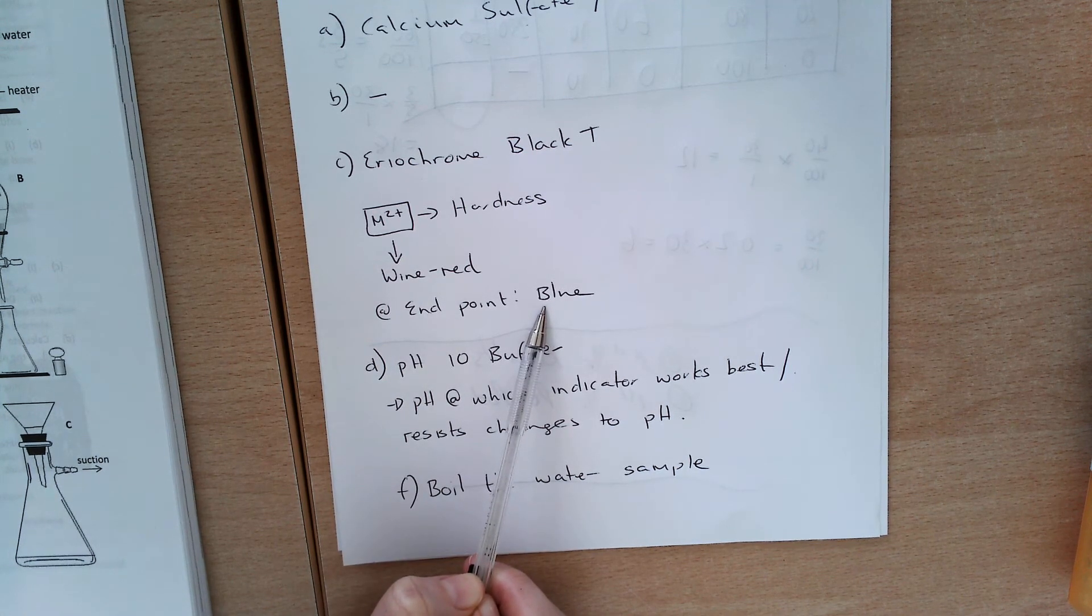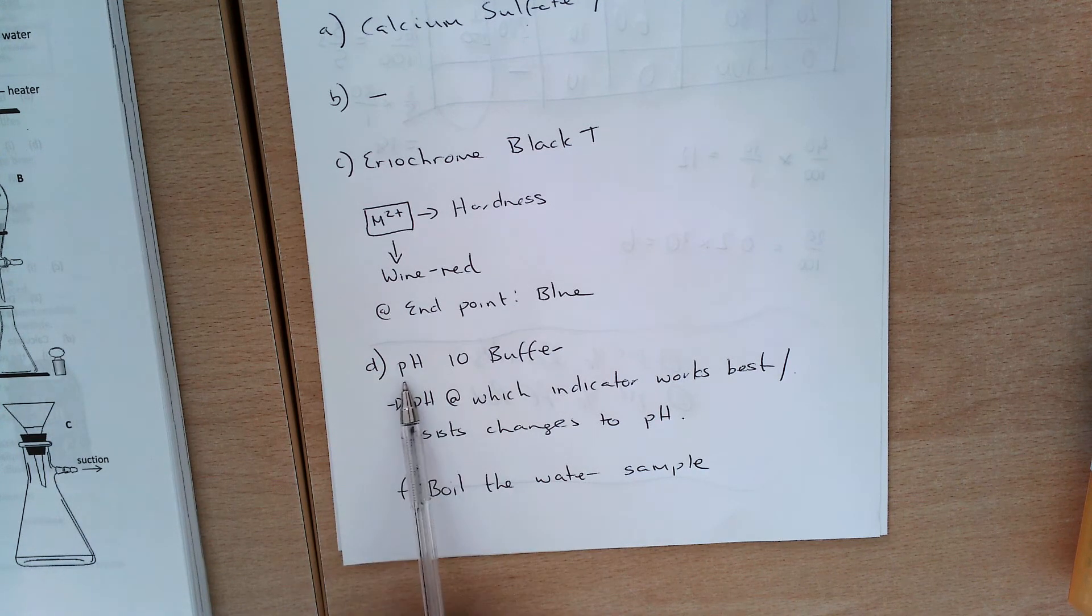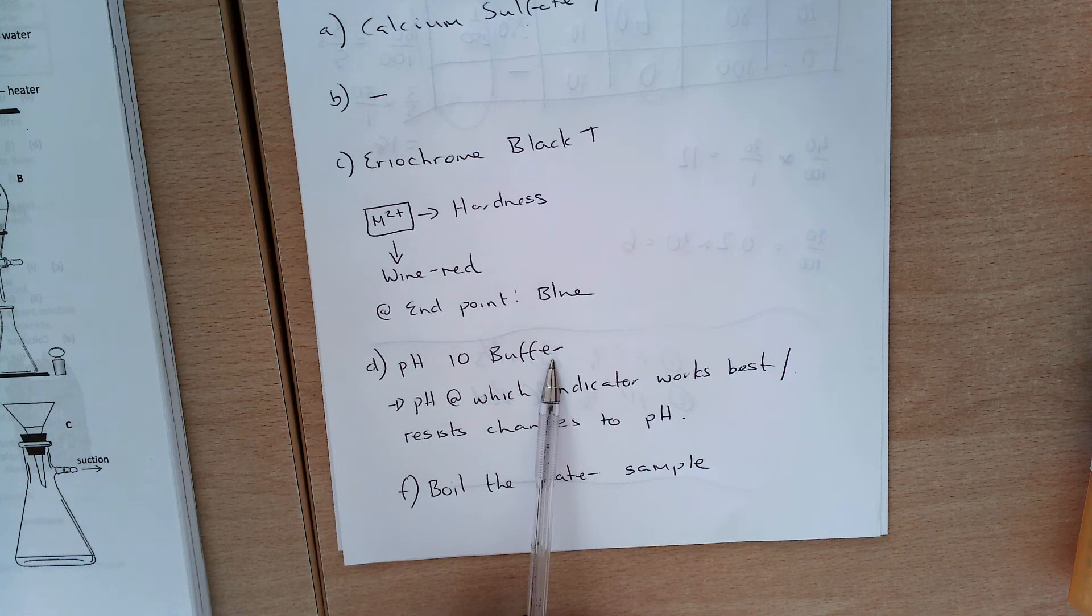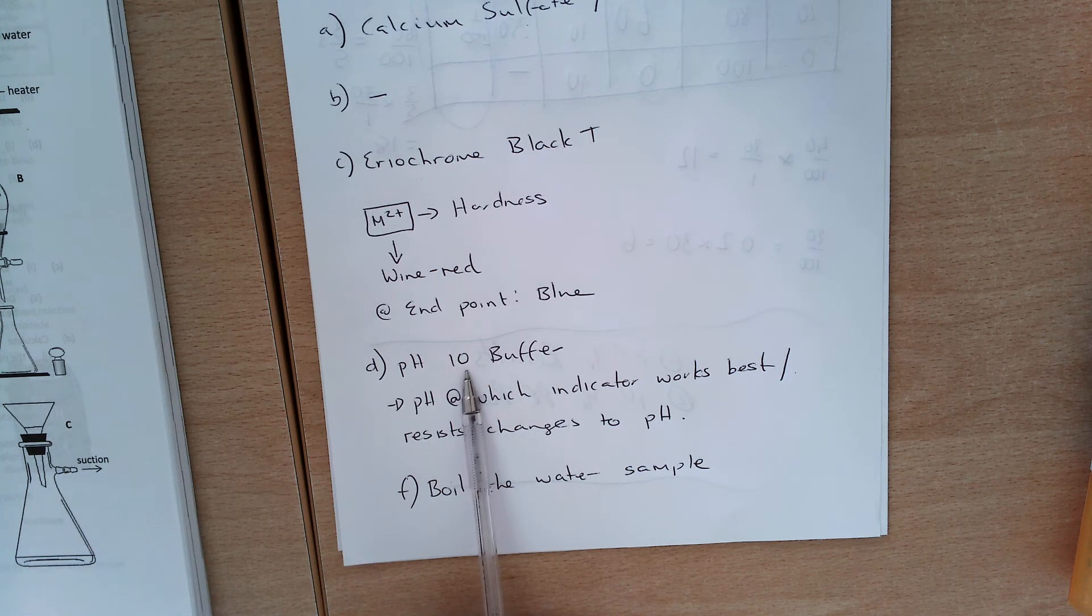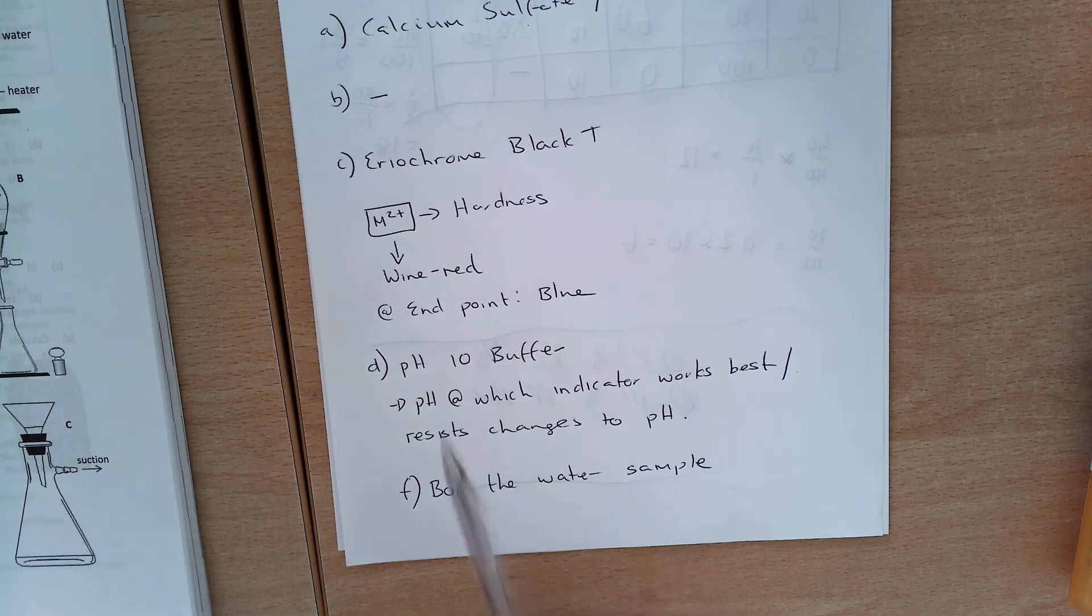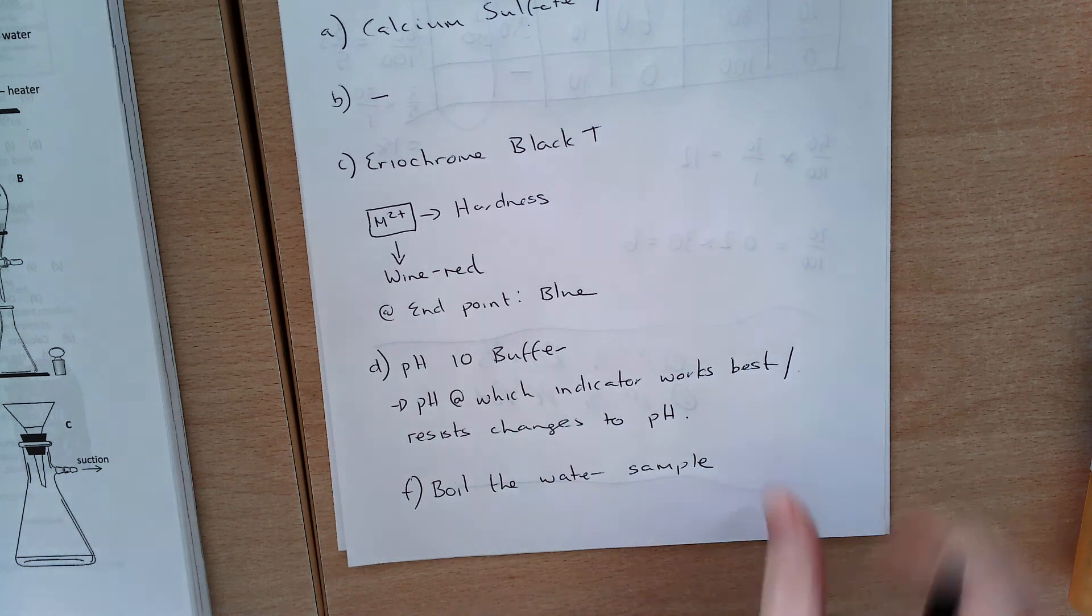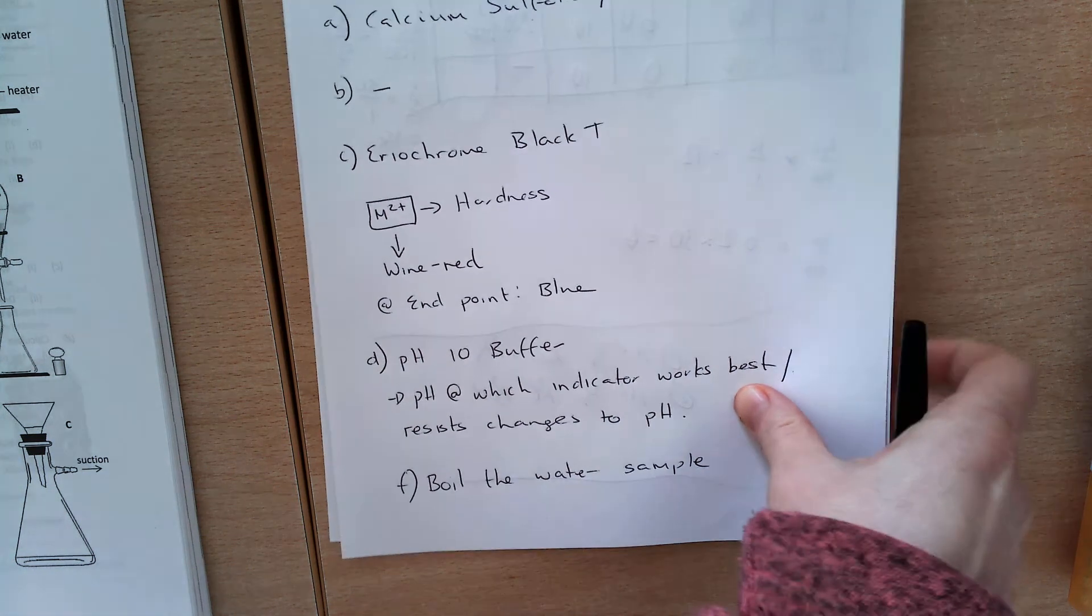A small volume of another solution was added to the water sample before commencing the titrations. The other solution is a pH 10 buffer. Do include 10, the actual buffer number. And the solution is added because it's the pH in which the indicator works best. Now there are a few ways in which you can phrase that if you want to have a look at the marking scheme. I would also, this is what a buffer actually does, so just to make sure you get your full marks, it would include there that it resists changes to pH.